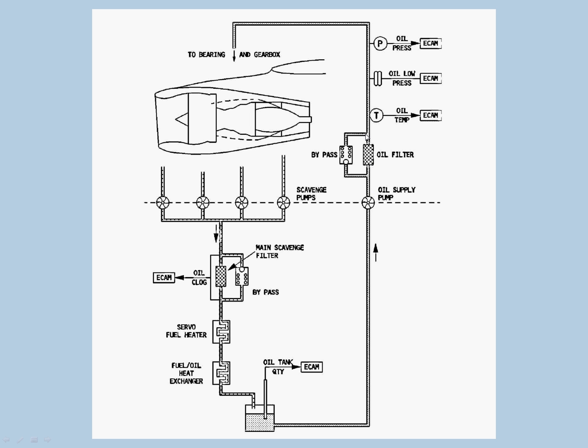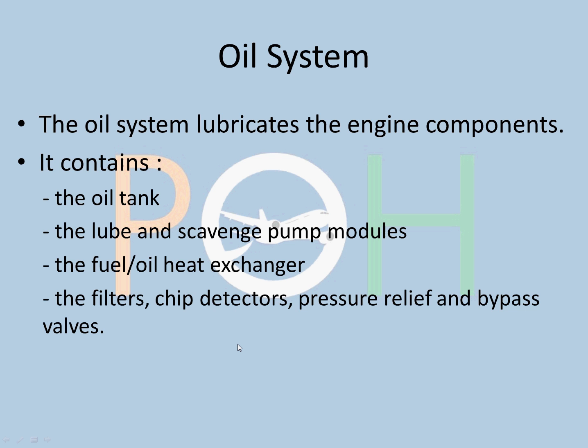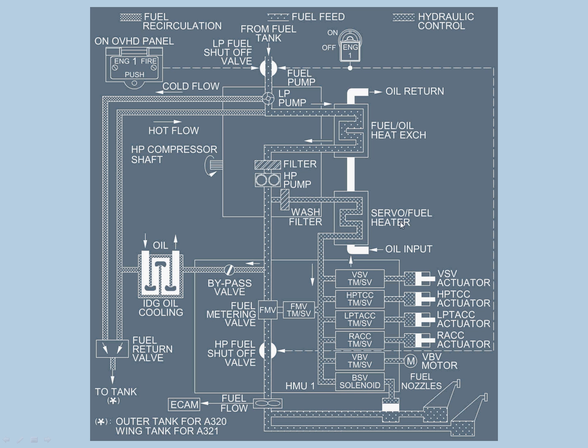The oil supply pump extracts oil from the reservoir. There's an oil filter; if it gets clogged, it goes via the bypass. The temperature is measured first. If oil is giving low pressure, it shows a warning and the pressure is shown on the ECAM. Then it is given to the bearing and the gearbox where it lubricates them. There are scavenge pumps which extract the oil, and then it goes through the main scavenge filter. If it gets clogged, there's an ECAM warning and it goes via the bypass.